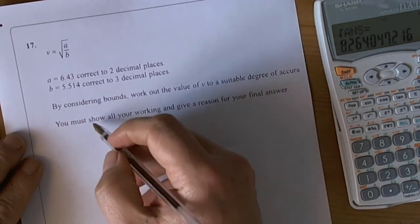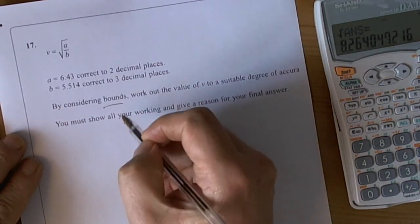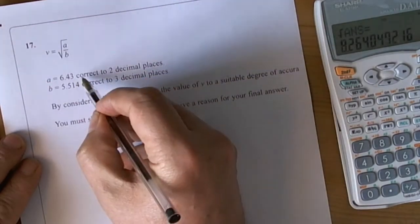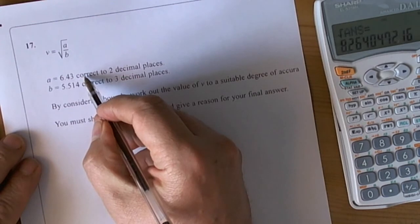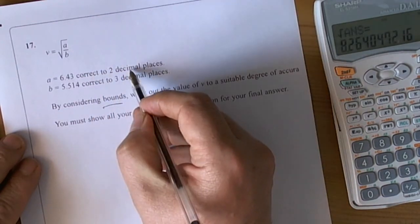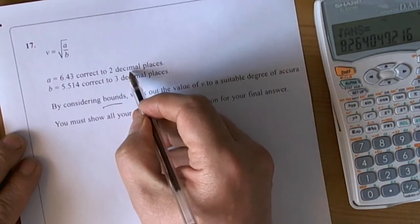Now this question involves bounds. They've told you the word bounds there, and if you didn't actually see the word bounds, it's this idea that you've been given numbers correct to a given number of places or sometimes correct to a given number of decimal places.